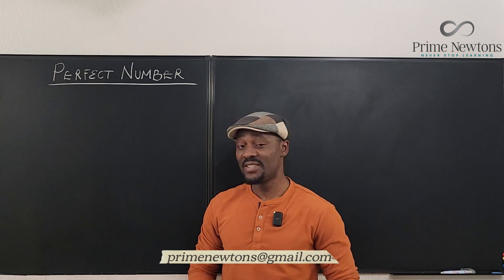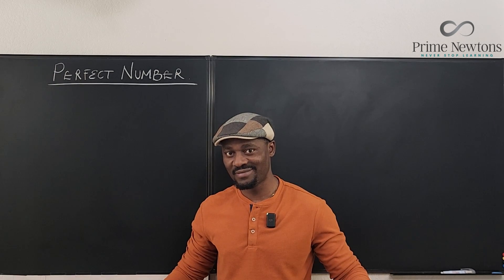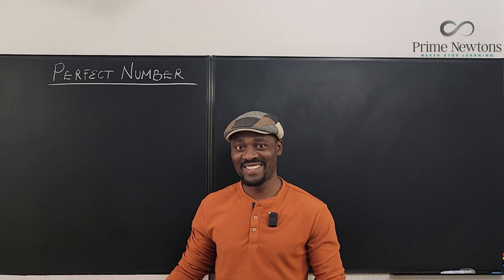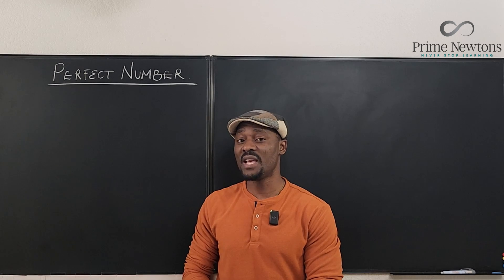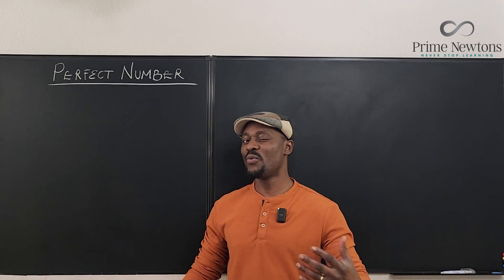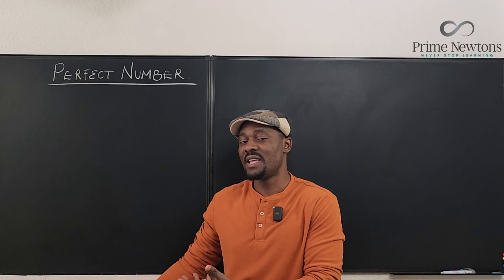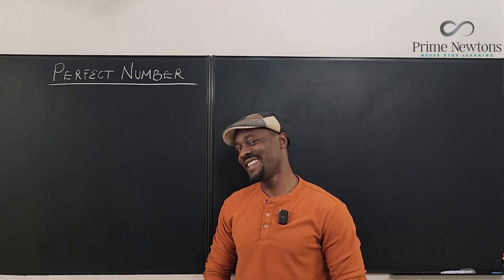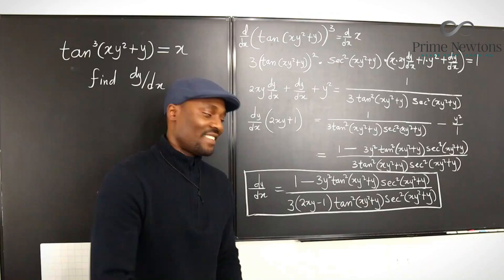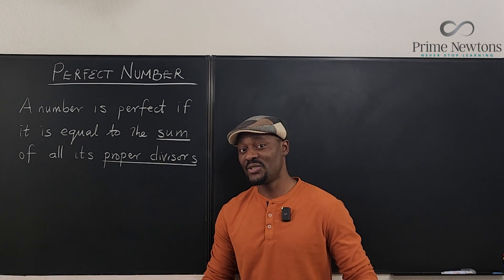Welcome to another video. This is a topic in number theory and we want to talk about perfect numbers. I've heard that 10 is a perfect number, but not in number theory. The number six is the smallest known perfect number. What exactly makes a number perfect? Let's look at the definition of a perfect number.